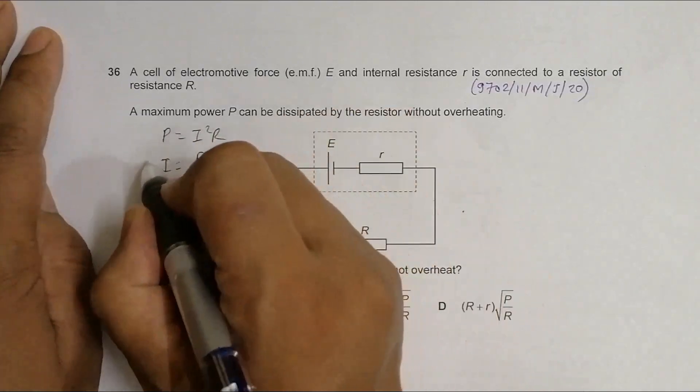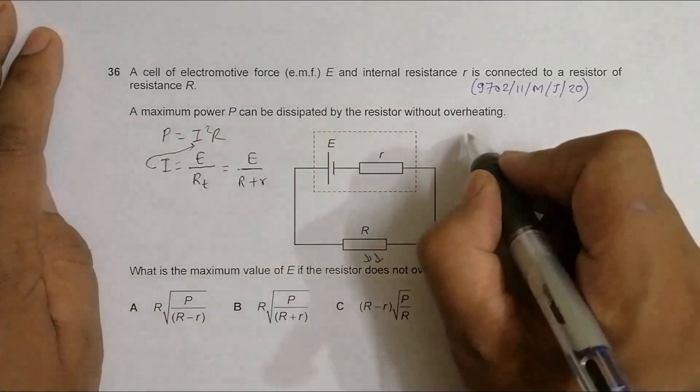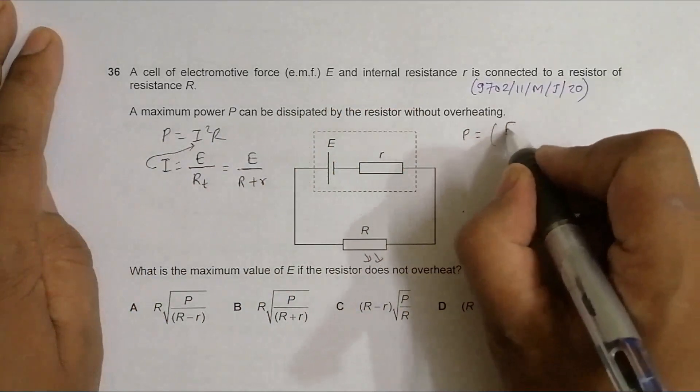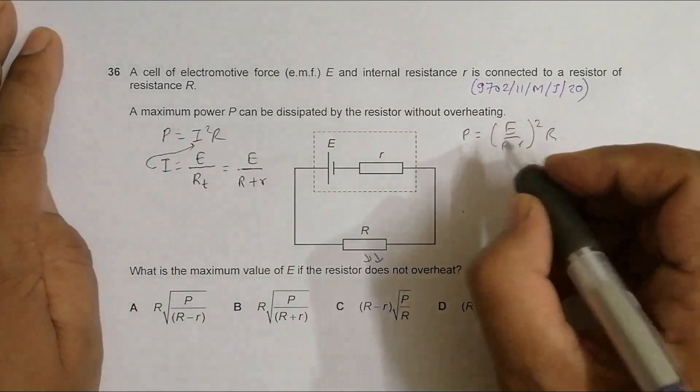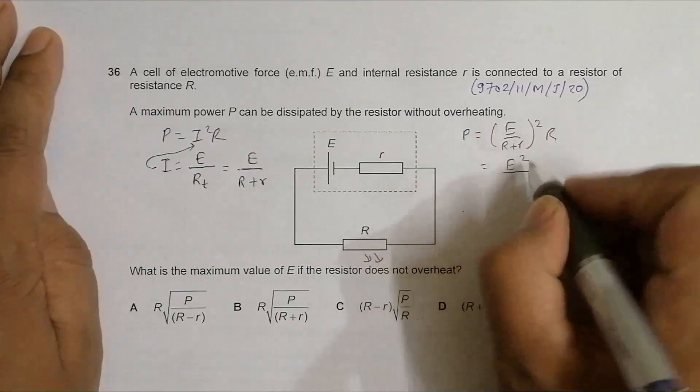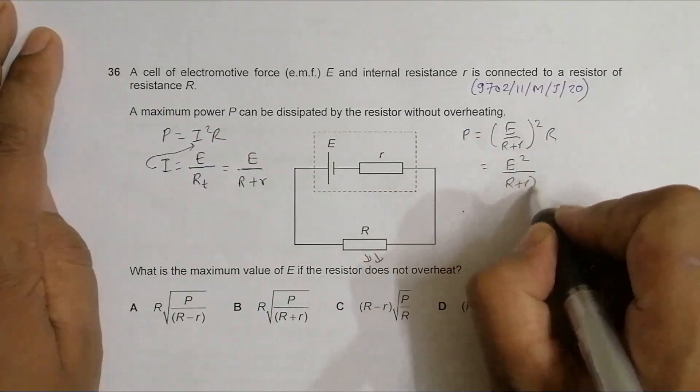Let me substitute this value. So I will have power equals E by R plus r whole squared, then R. This gives us equal to E squared by R plus r whole squared then R.